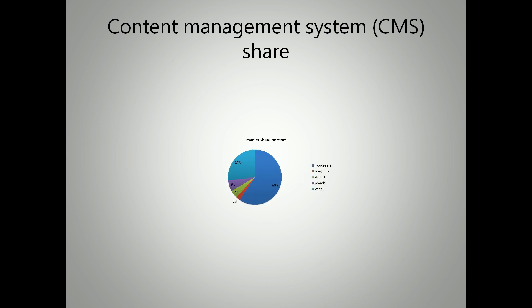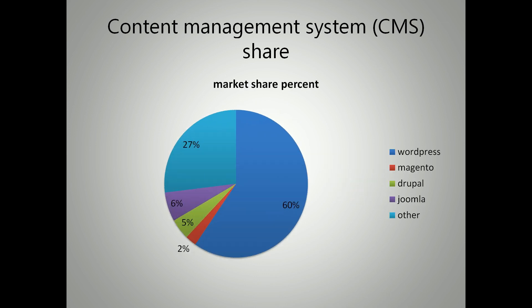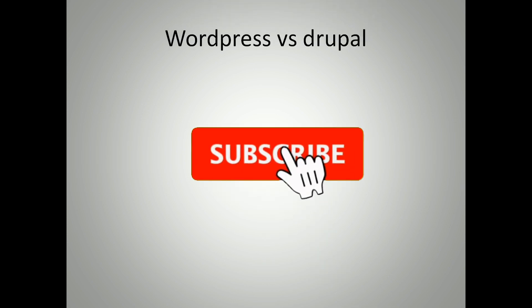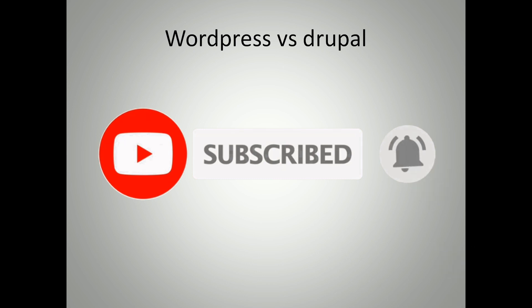Let's talk about the content management system market share. Looking at a market share percentage pie chart, WordPress occupies the largest share at 60%, making it one of the largest content management systems because it is easy to use. Magento occupies 2%, Drupal 5%, Joomla 6%, and all other content management systems together occupy 27% of the market.